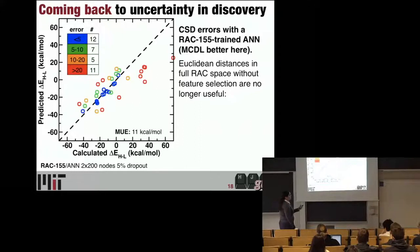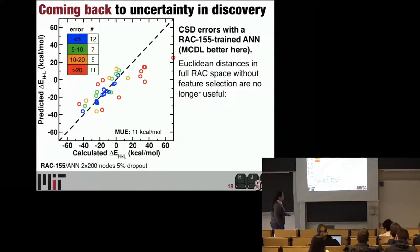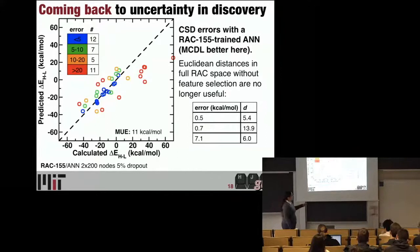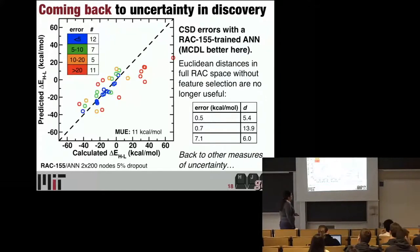We had decided MC dropout was not enough. We had favored, when we had an MCDL feature set, this heuristic of the distance in feature space. This is a neural net trained with RAC155, and the Euclidean distances in full RAC space are no longer useful — the neural net is essentially doing the feature engineering for us in this case. So we wanted to look at something else. MC dropout here — you can see it's not helping us at all. The error bars are all the same size. A lot of people are fans of doing ensemble models, training models on different partitions of the data — but those error bars are also not predictive; they're not telling us where we're failing miserably.